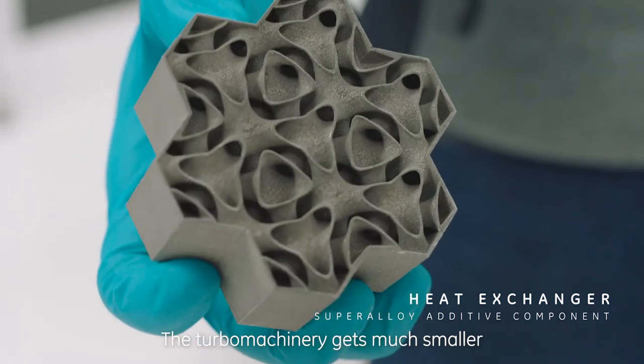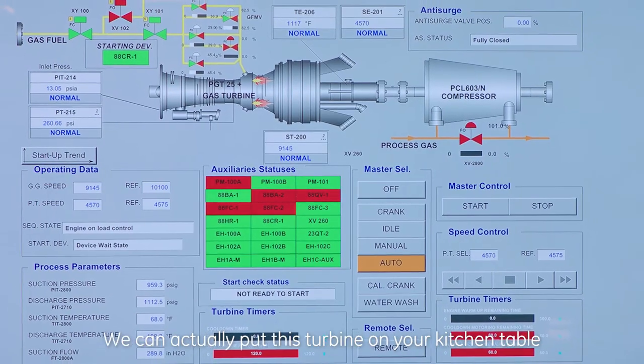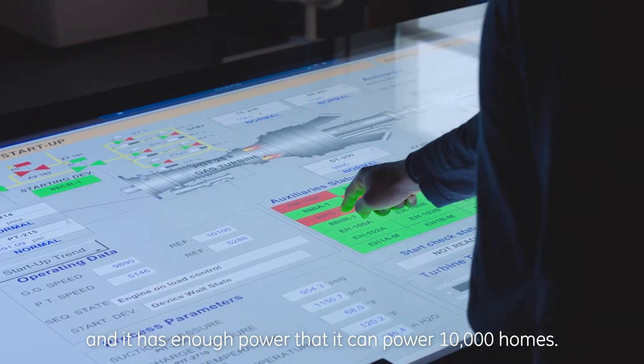The turbine machinery gets much smaller for the same power output. We can actually put this turbine on your kitchen table and it has enough power that it can power 10,000 homes.